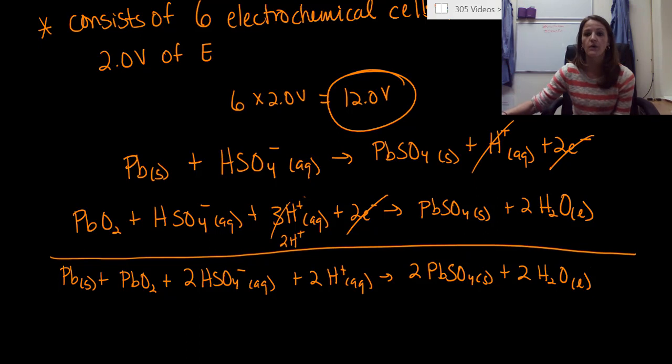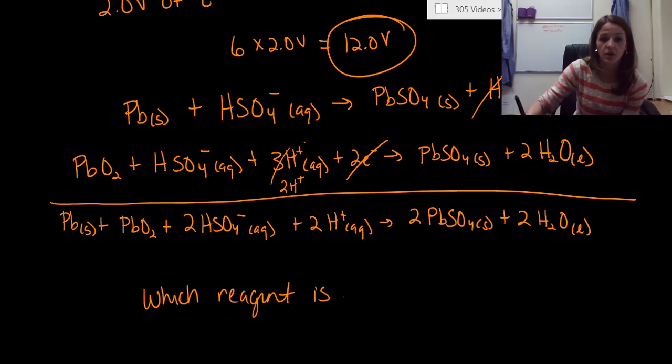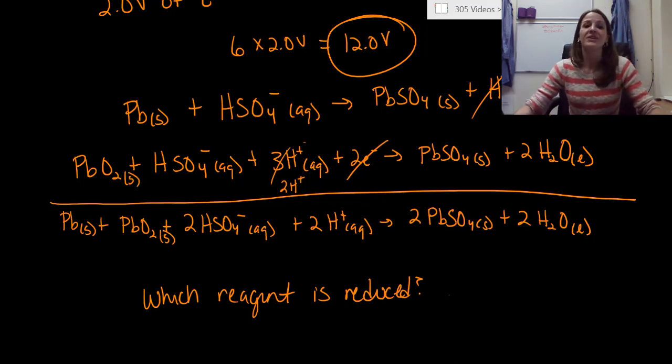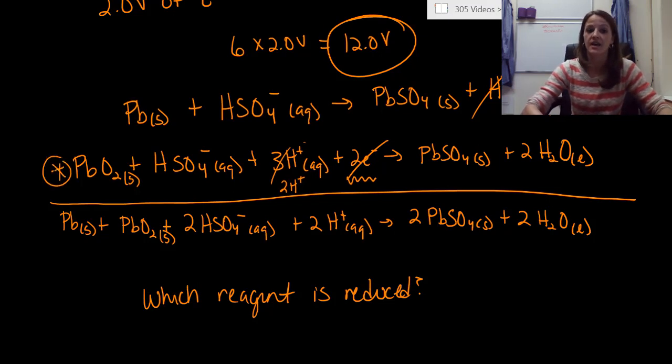So before I keep going and show you a schematic of this, I want you to identify which reagent is reduced. Go. All right, did you get an answer? Hopefully you did because there was just two options. So it either could have been lead or lead oxide. So the big thing you needed to do is just say which of my reagents is reduced. Which one gains electrons? Which one has electrons on the reactant side of the equation? And that is definitely lead oxide.